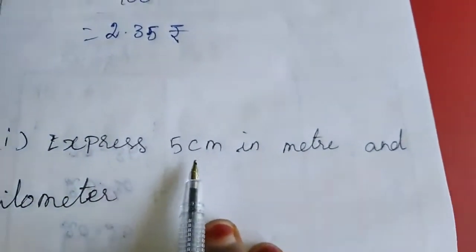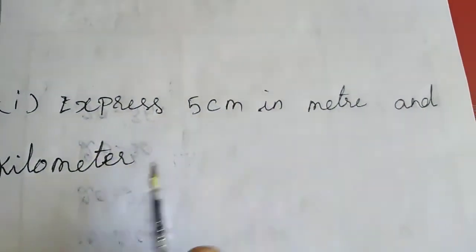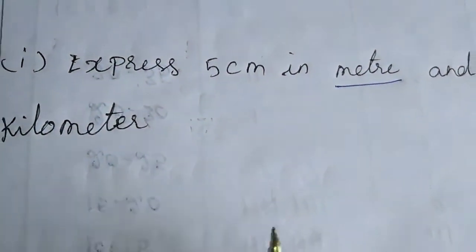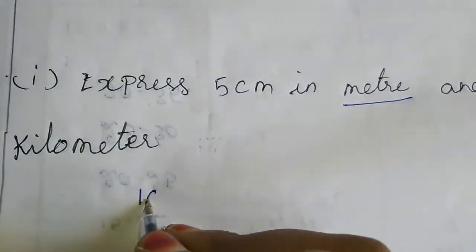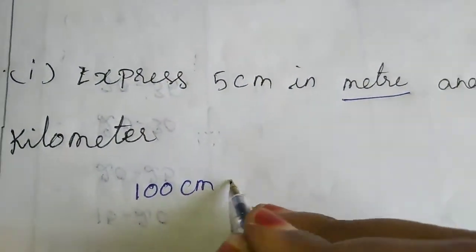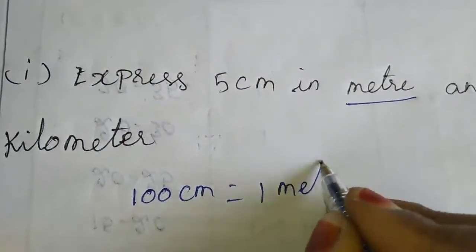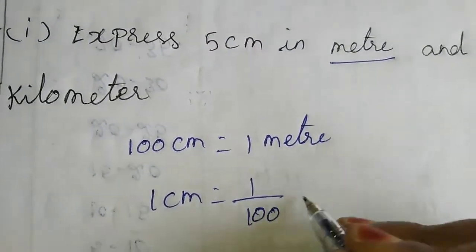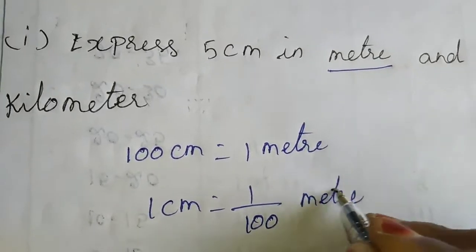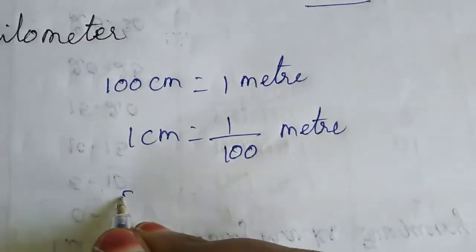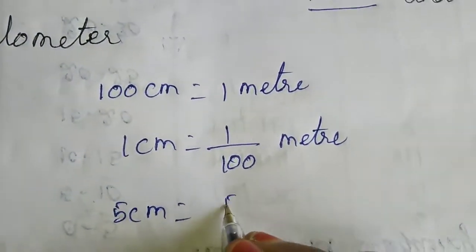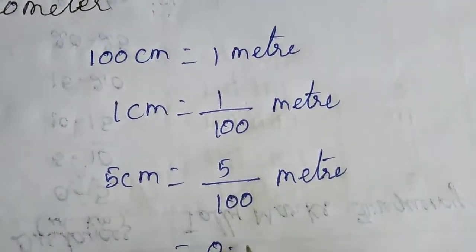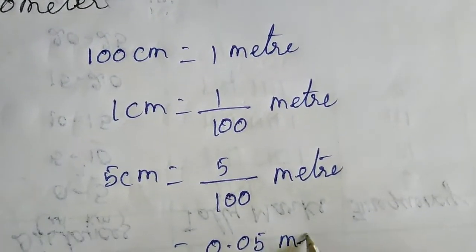Now the third sum: express 5 centimeters in meters and kilometers. First I am going to express in meters. 100 centimeters equal to 1 meter, so 1 centimeter equals 1/100 meter. But here we have 5 centimeters, so 5 centimeters equals 5/100 meter, which we write as 0.05 meter.